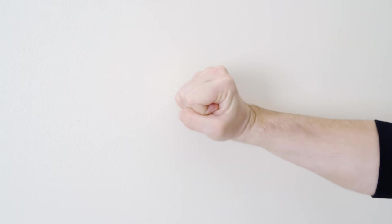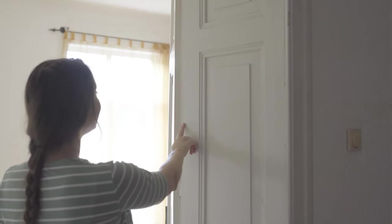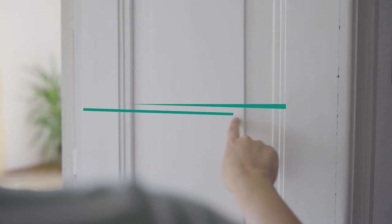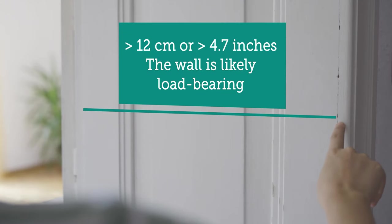If the sound it makes is hollow, it indicates that the wall is likely not strong enough to support a hammock. Another trick is to measure the thickness of the door frame. If the wall does not sound hollow and the frame is thicker than 12 centimeters, the wall is probably load-bearing.